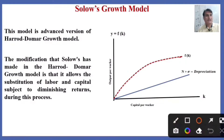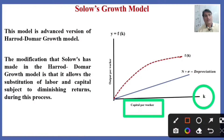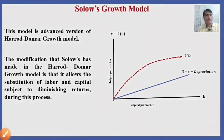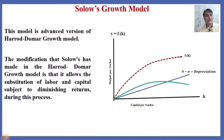Depreciation is directly linked with capital per worker K. As capital increases, depreciation will also increase. So depreciation is directly linked with the amount of capital available in the economy. Saving is a function of capital.